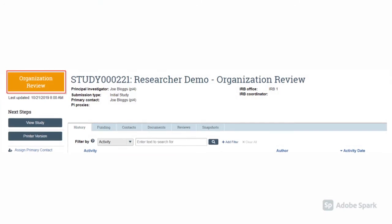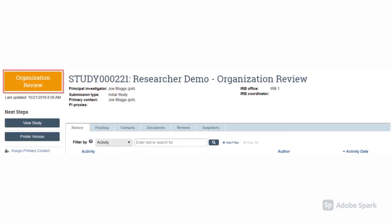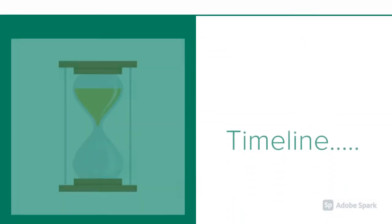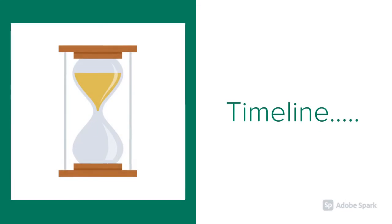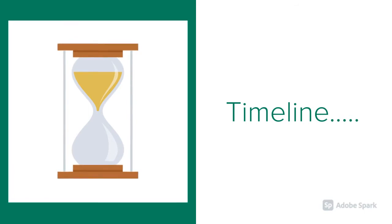Upon submitting your application, it's going to be routed to your department or organization and/or USF affiliated organization. They're going to review it for scientific and scholarly approval before the IRB can review your study. The timeline of this phase depends on your individual department and/or the USF affiliated organization you're working with. The department and affiliated approval could take anywhere from a few days to a few weeks, depending on factors such as current department workload or time of year.